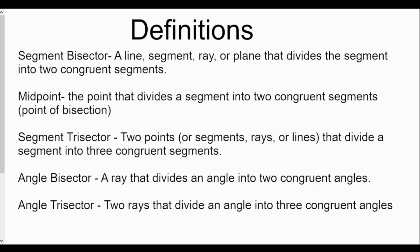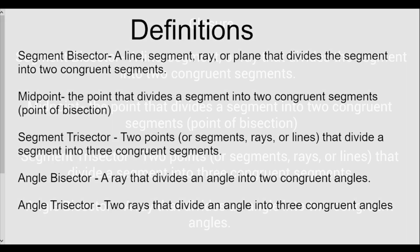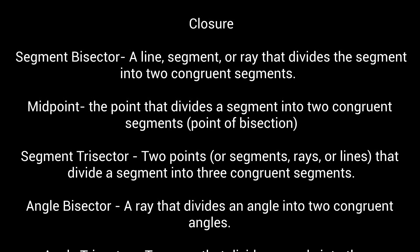Summarizing all these definitions: we covered segment bisector, midpoint, segment trisector, angle bisector, and angle trisector for section 1.5. A segment bisector is a line, segment, or ray that divides a segment into two congruent segments. A midpoint is the point that divides a segment into two congruent segments, which is the point of bisection. A segment trisector involves two points, segments, rays, or lines that divide a segment into three congruent segments. An angle bisector is only a ray that divides an angle into two congruent angles. Make sure you memorize these and create conditional statements for them, as that will be extremely beneficial.